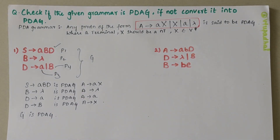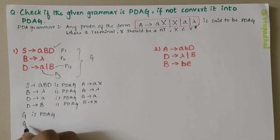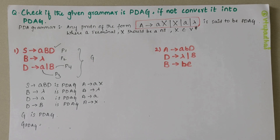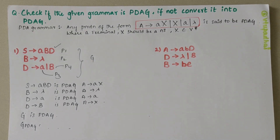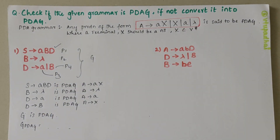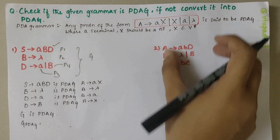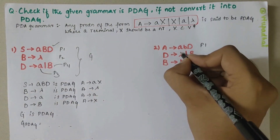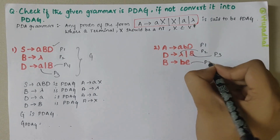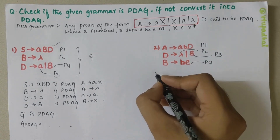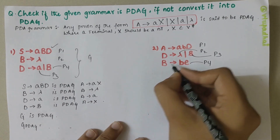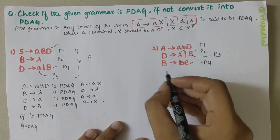If there was any change, I would have written G PDAG equals the new grammar. But since no changes were needed, this grammar obeys the condition of PDAG. Coming to the next grammar, I have P1, the second production, the third production, and the fourth production.